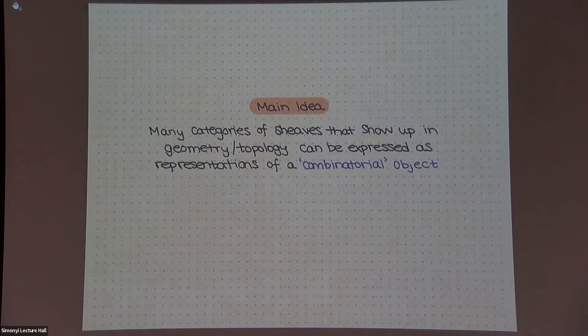Okay, so the main idea of the talk is that many categories of sheaves that show up in geometry and topology can be expressed as some sort of representations of some maybe more fundamental combinatorial object. So if you don't like the word sheaves, don't worry, because everything will be via example.